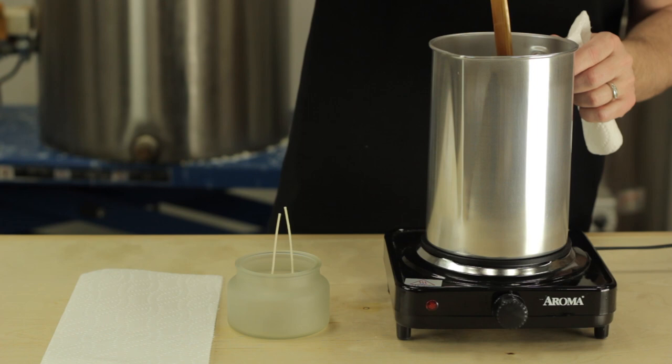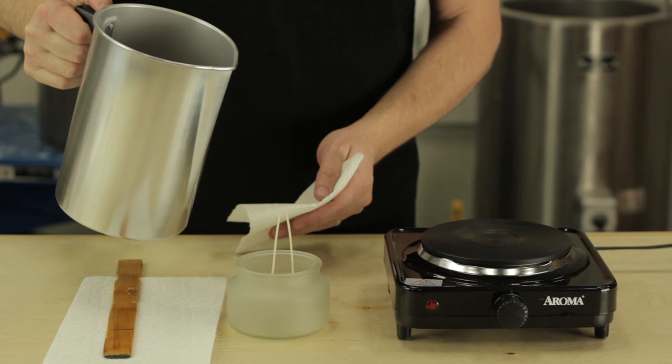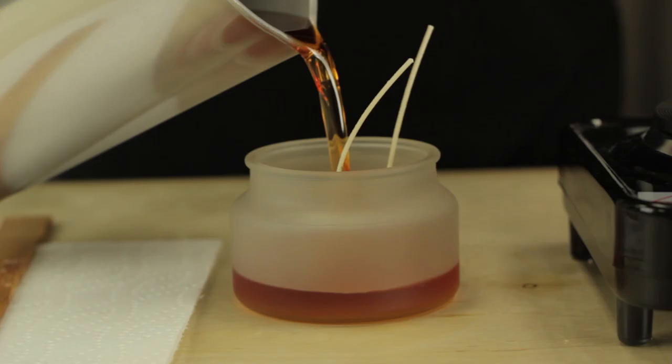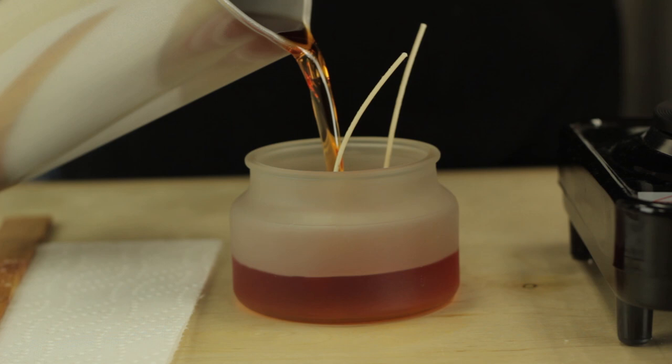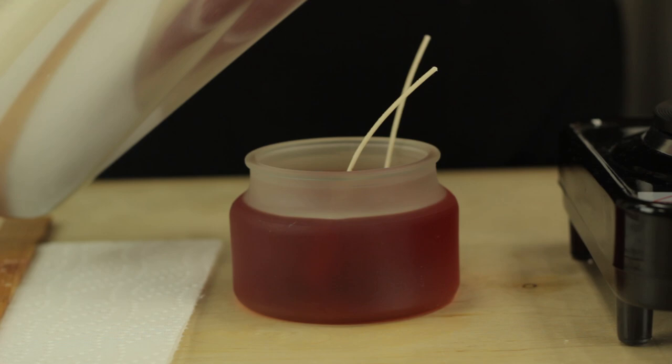At this point, I'm going to let the wax just naturally cool slowly to the temperature that I'd like to pour at. Now we at Pure Integrity Candles typically are pouring our candles at around 110 degrees. Most people choose to pour around 130 degrees, but that's up to you.